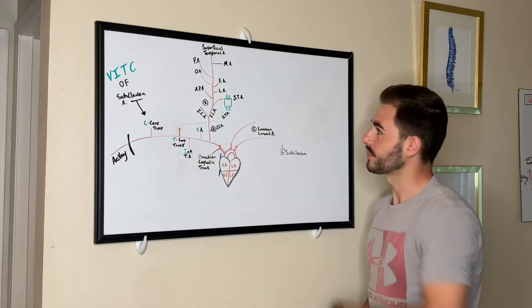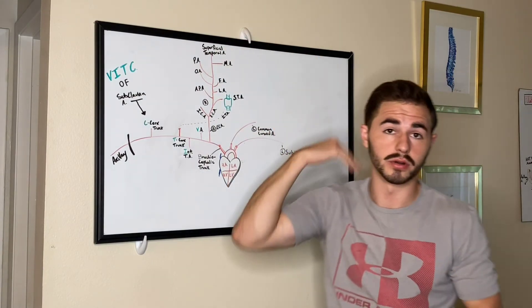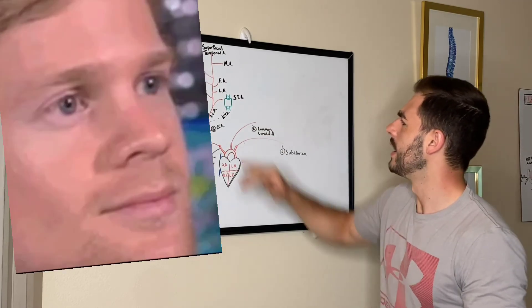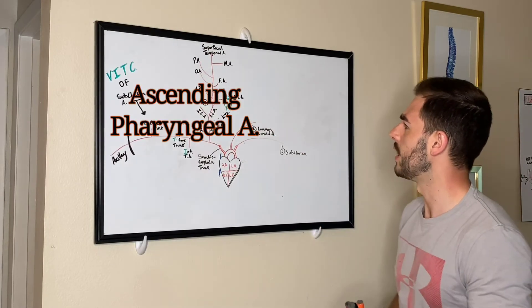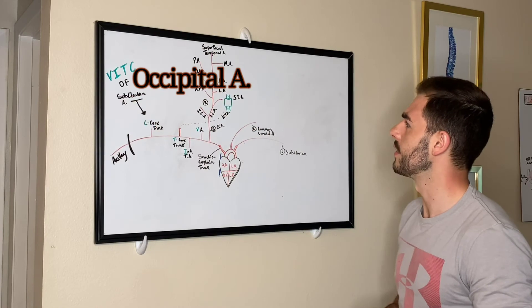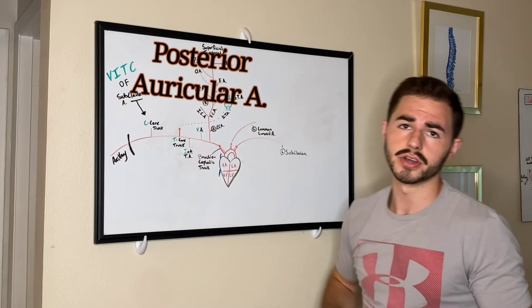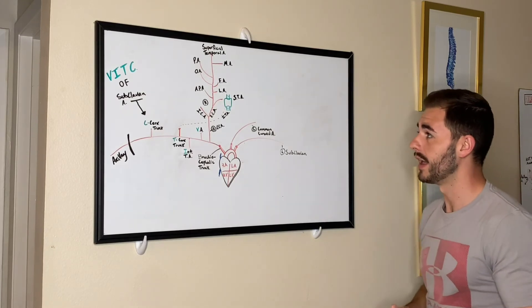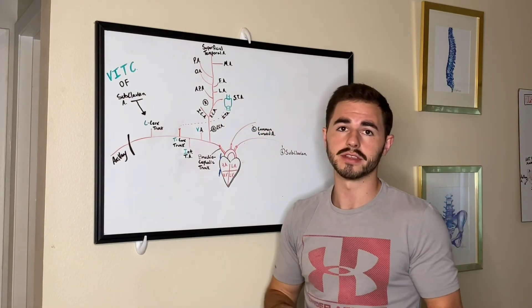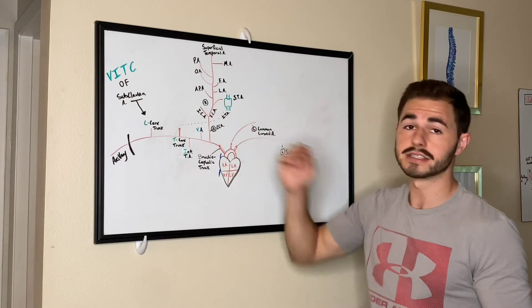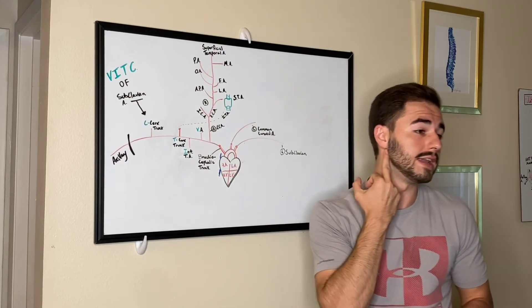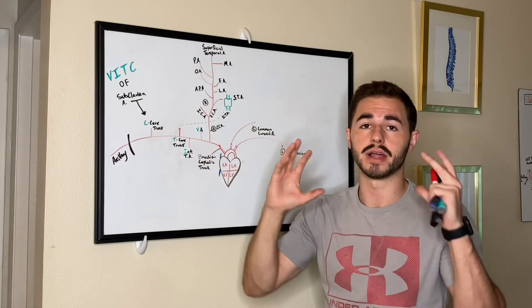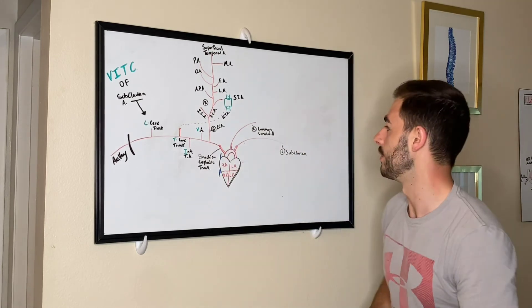And on the backside, coming from superficial temporal down, you have the APA, the ascending pharyngeal artery. And then you have the occipital artery. And then you have the posterior auricular artery. And that's going to do it for the branches of the ECA. Now the reason I didn't do anything for the ICA is because that's going to branch off and go interior inside your head to supply the brain. So that's that.